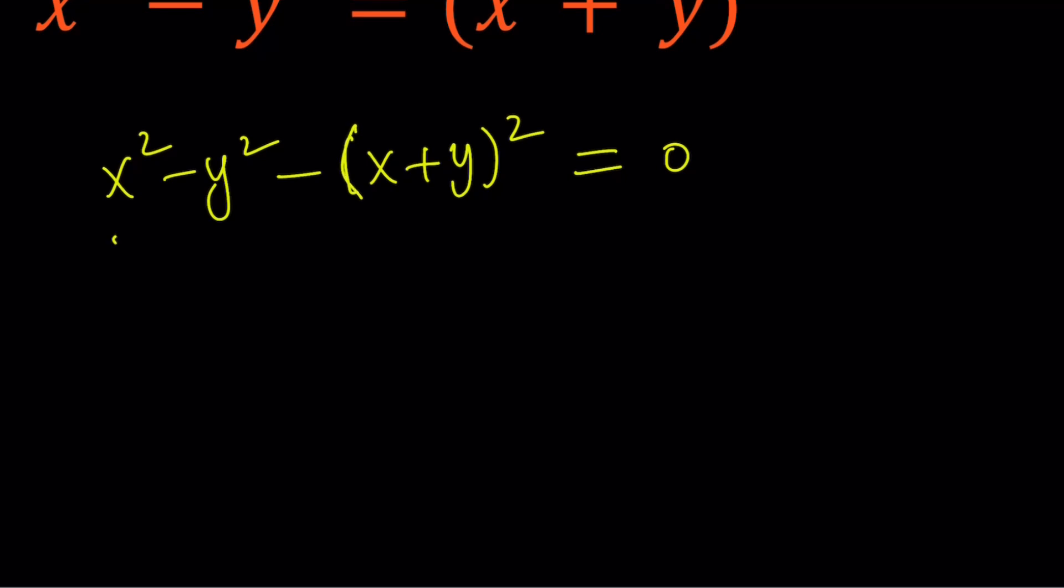x squared minus y squared is a difference of two squares, and it can be factored as x plus y times x minus y. And then x plus y squared is just x plus y times x plus y.